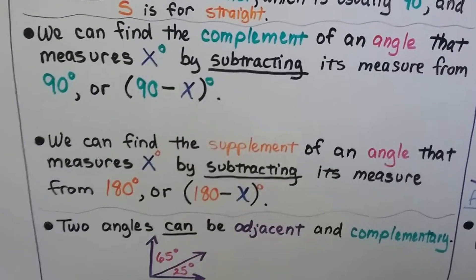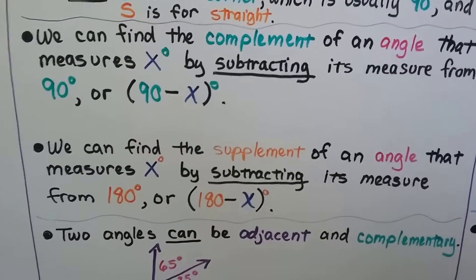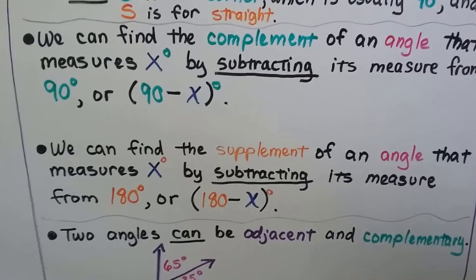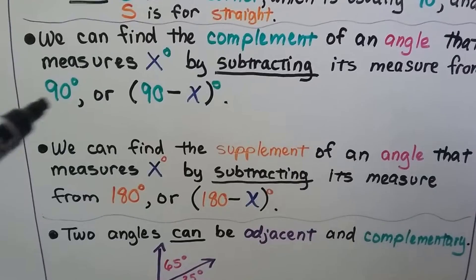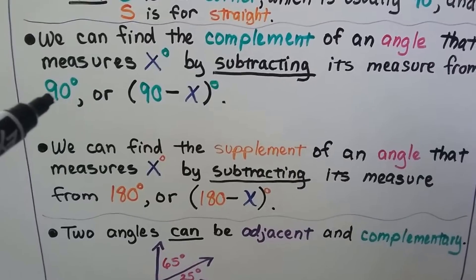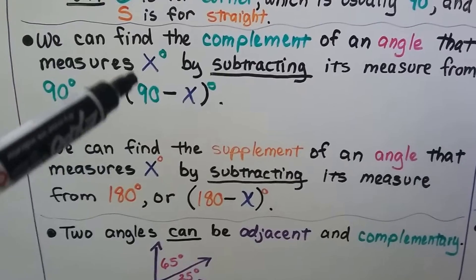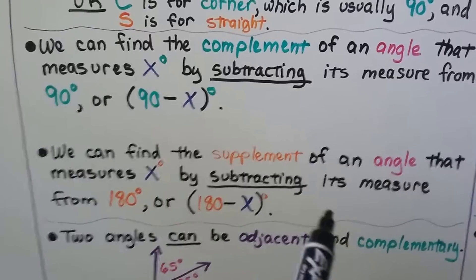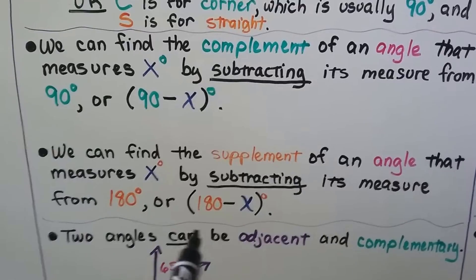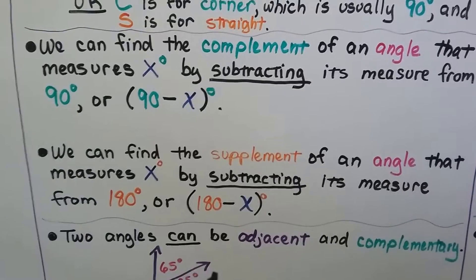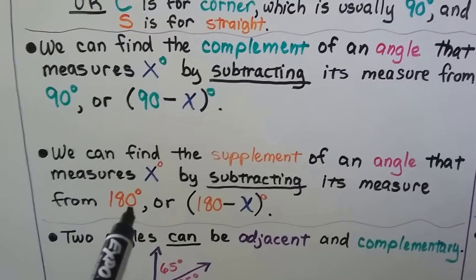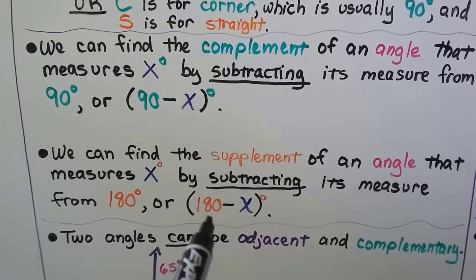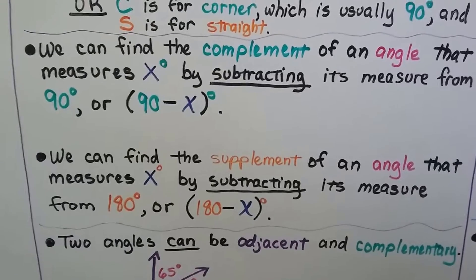We can find the complement of an angle that measures x degrees by subtracting its measure from 90 degrees: 90 minus x degrees. We can find the supplement of an angle that measures x degrees by subtracting its measure from 180 degrees: 180 minus x degrees.